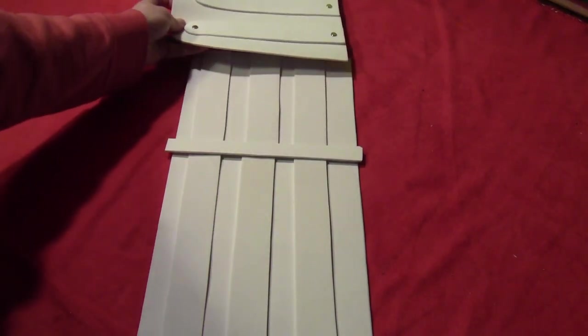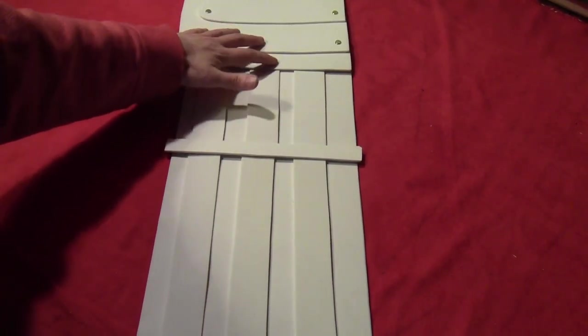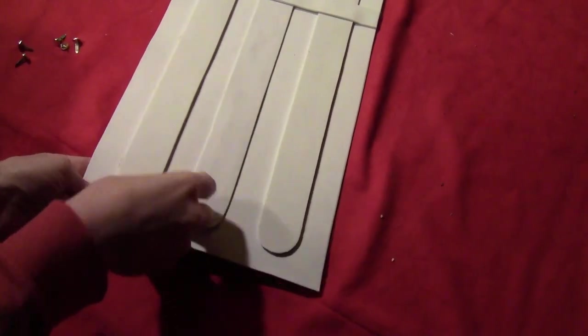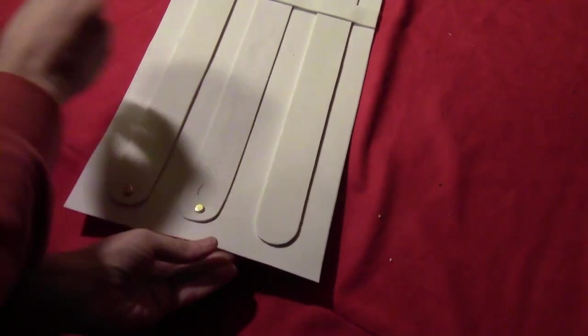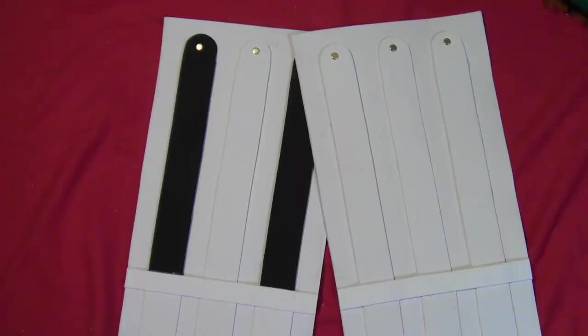At the top, glue the shoulder piece with rounded edges to the outside. Then put more paper fasteners in the long rectangles at the bottom.